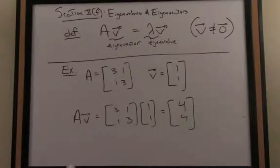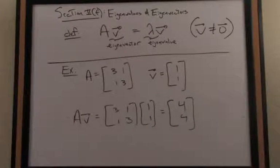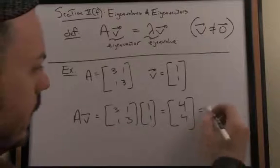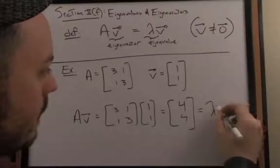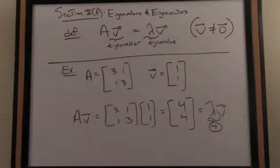So what do we have here? We have AV, my matrix times this vector. Well, the action of that multiplication in a geometric sense is a scaling of the original vector V by value 4. So AV, in other words, is equal to lambda, where lambda is 4, my scaling factor, times the original matrix.